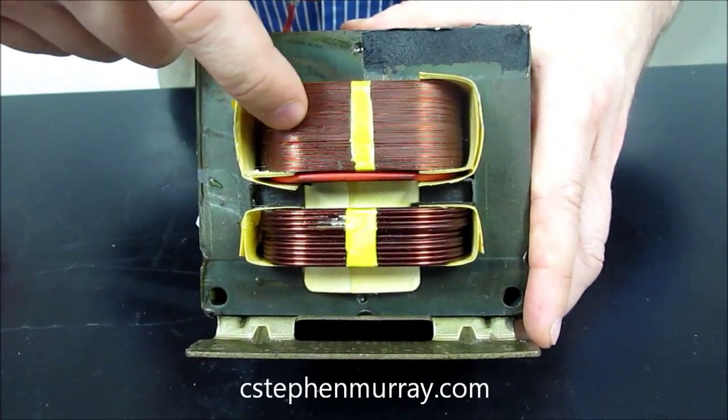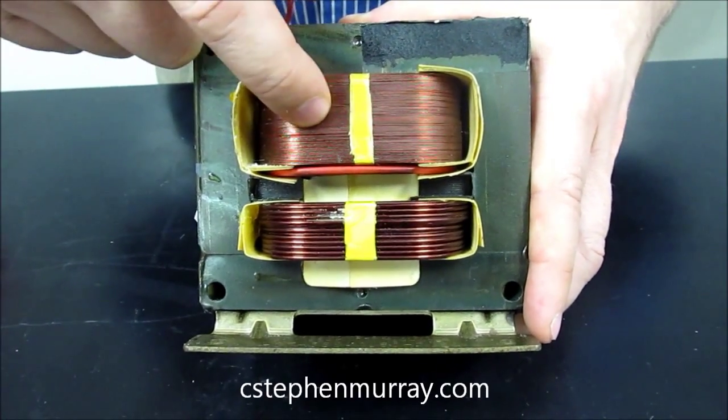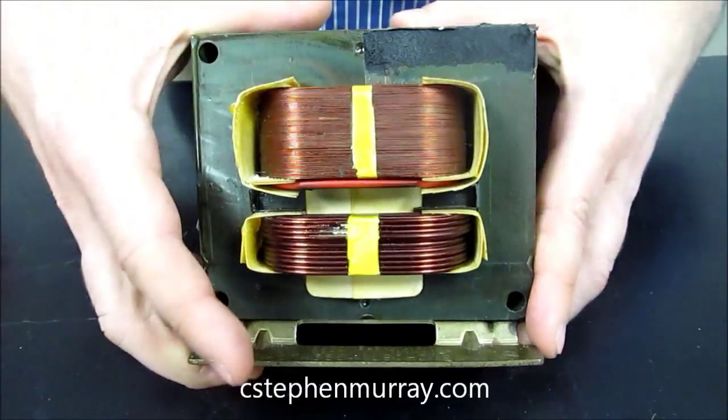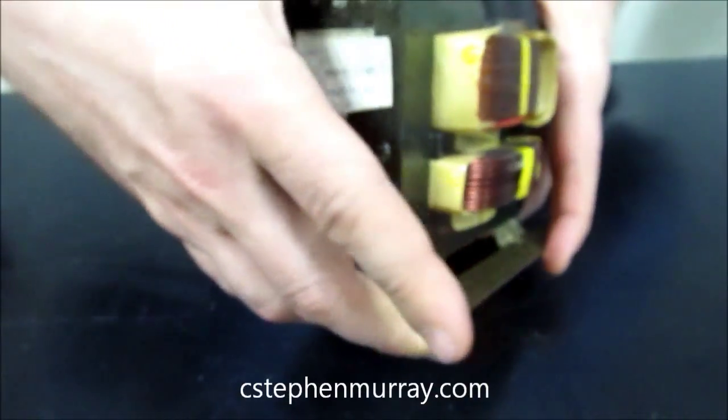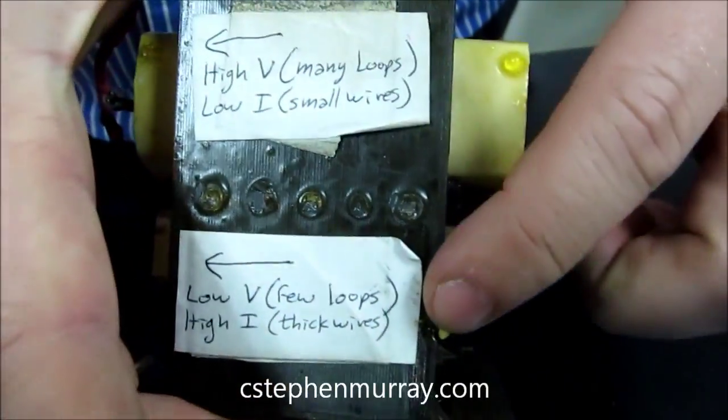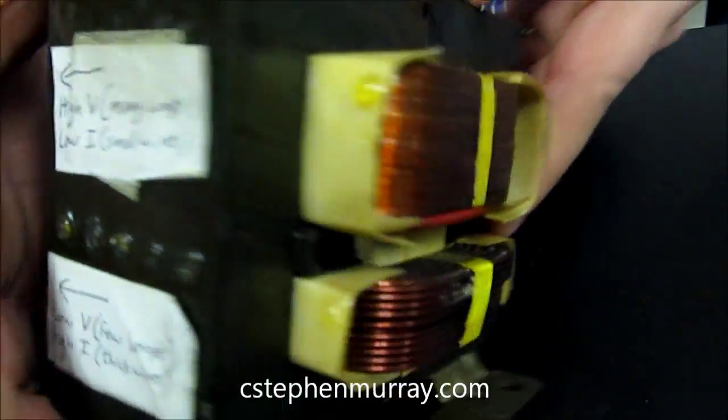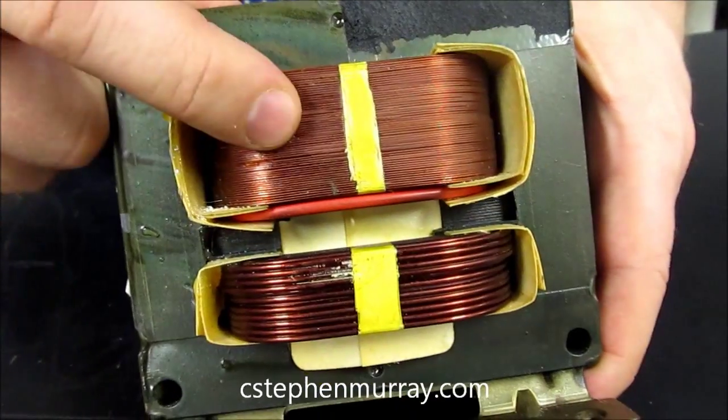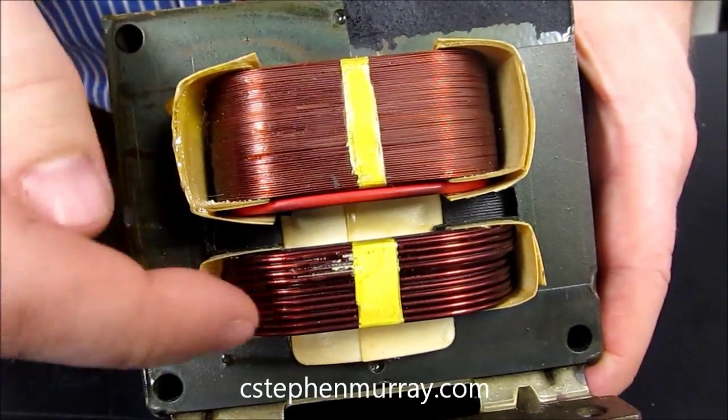Notice here we have a lot of coils. We have very few coils on the bottom. Let me turn it kind of this way here. I've got them kind of described. You can kind of see it says high voltage, low voltage. Let's turn it. Notice high voltage, a lot of turns. Low voltage, a few turns.